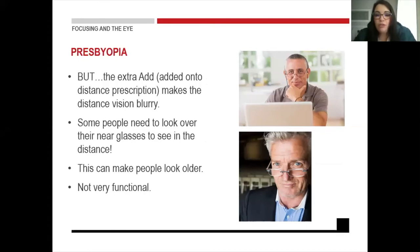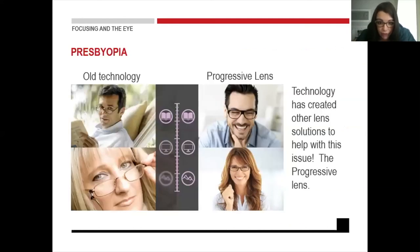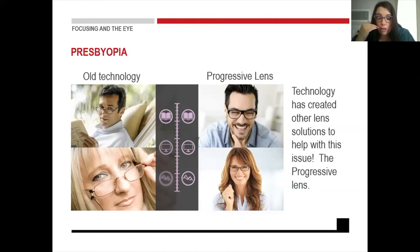You need an extra add to see clearly at near, but if the patient is looking through reading glasses with the extra add, they will not be able to see far — and that is why they move their reading spectacles to the tip of their nose. This can look a bit older and isn't very functional because they have to keep putting them on and taking them off. That is why progressive lenses have been designed. Progressive lenses incorporate the distance vision at the top and the reading script at the bottom, increasing gradually, so a patient does not have to wear spectacles on the tip of their nose anymore.